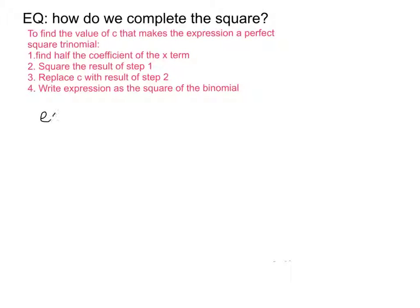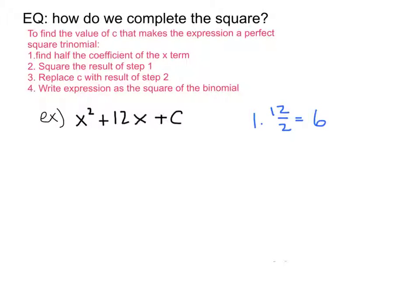I'm going to find the value of C that would complete the square for x squared plus 12x plus C. The first step is to find half the coefficient of the x term. The coefficient is 12, so half of 12 is 6. Step 2 says to square the result of step 1, so 6 squared equals 36.